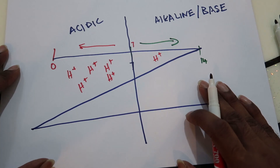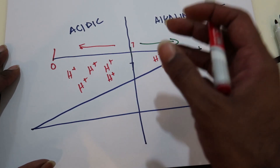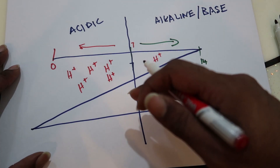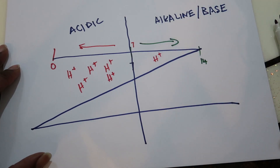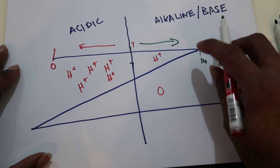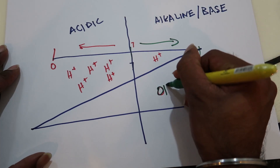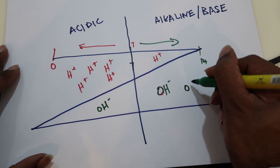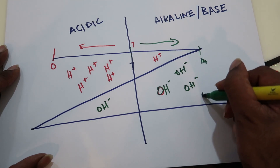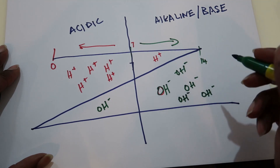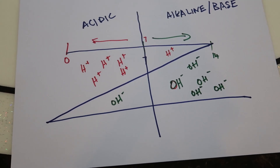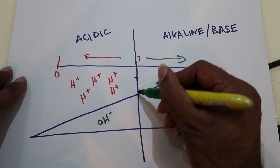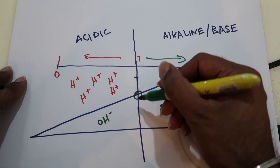If you have fewer hydrogen ions in your water, your water will be more alkaline. What makes your water more alkaline is fewer hydrogen ions and more hydroxide ions. When hydroxide ions and hydrogen ions are in equal parts, it will be neutral — pH 7.